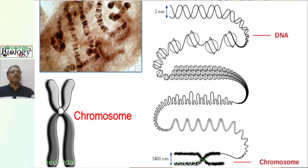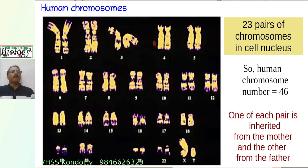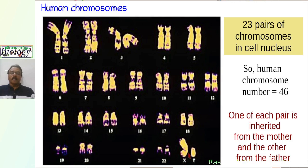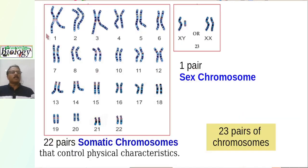A chromosome is 1400 nanometers wide and the DNA is only 2 nanometers wide. In human beings, each cell contains 46 chromosomes — 23 pairs. Out of each pair, one is from the mother and one is from the father. The last pair is different — this is the sex chromosome. The other 22 pairs are somatic chromosomes, which control physical characteristics. The sex-determining chromosomes are the last pair: XY or XX.